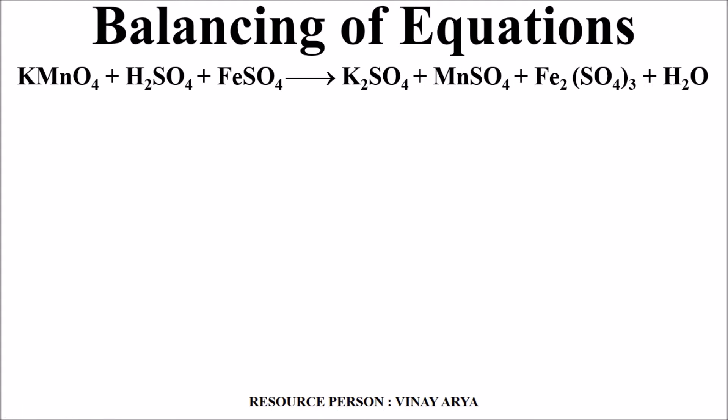Now writing the equation for it: KMnO4 + H2SO4 + FeSO4 gives K2SO4 + MnSO4 + Fe2(SO4)3 + H2O. Now in this reaction, since this reaction has two parts oxidation and reduction, we have to first of all segregate this equation into oxidation and reduction.